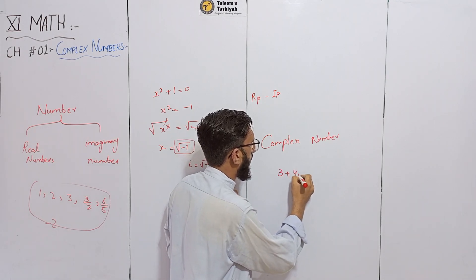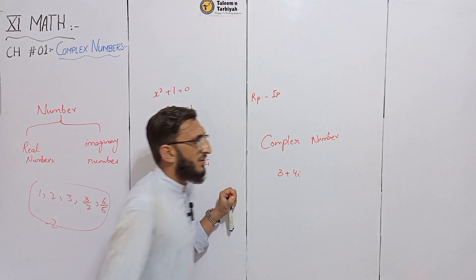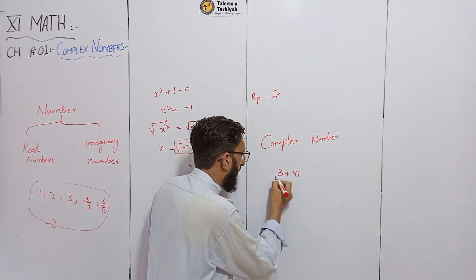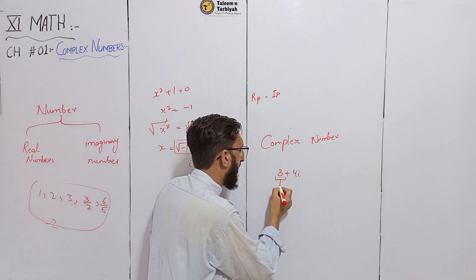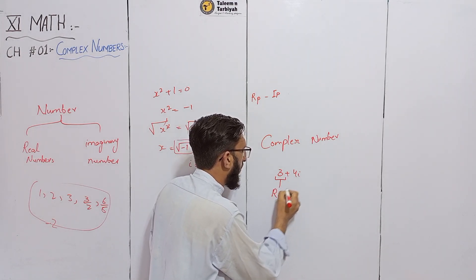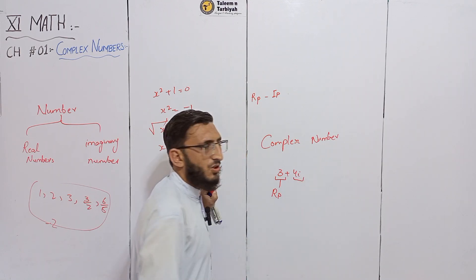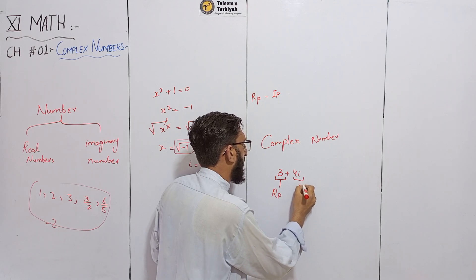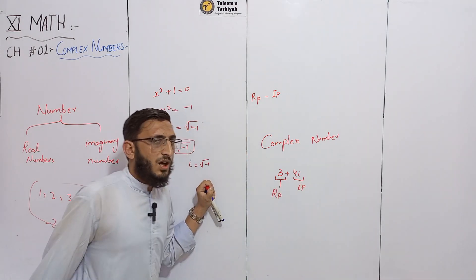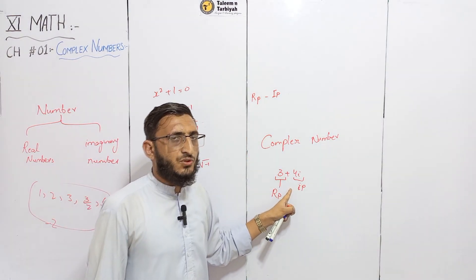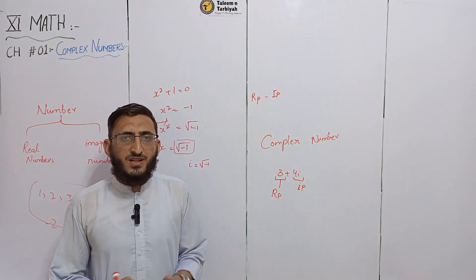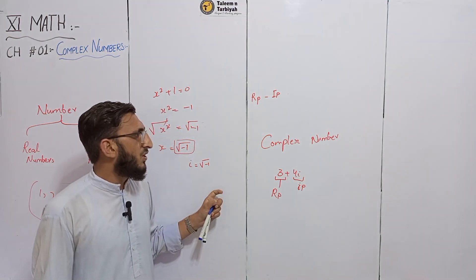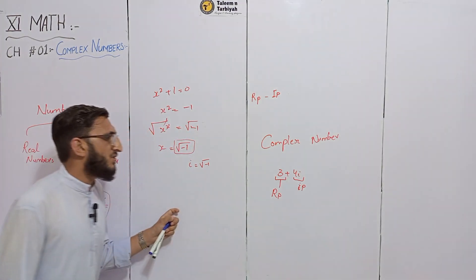For example, we have a number 3 plus 4i. This number has the real part and the imaginary part which is the iota. So this is the type of question we have: plus, minus, divide, and multiply. How do we do that? We will see this introduction.